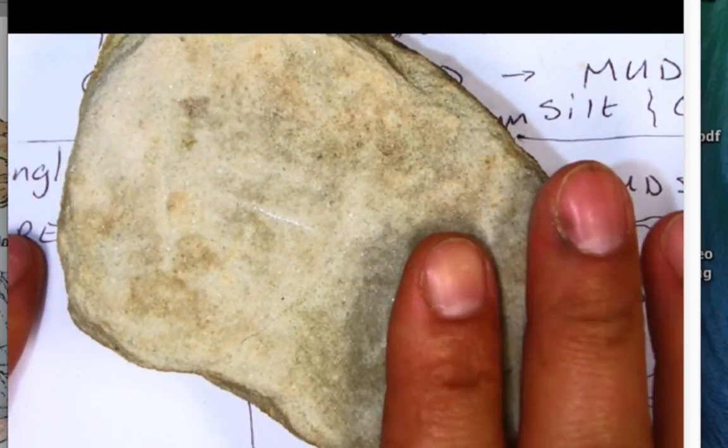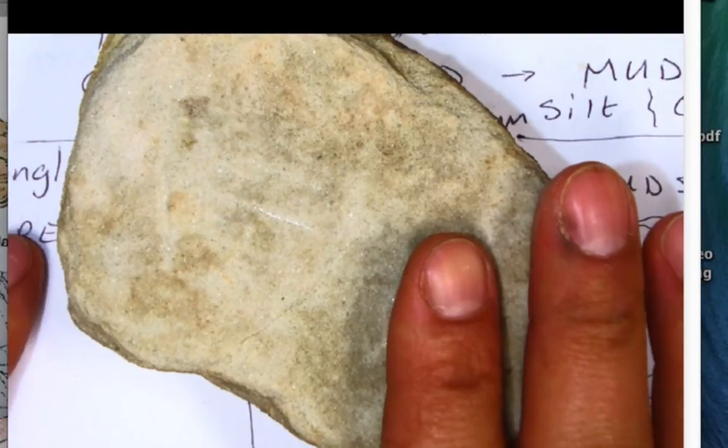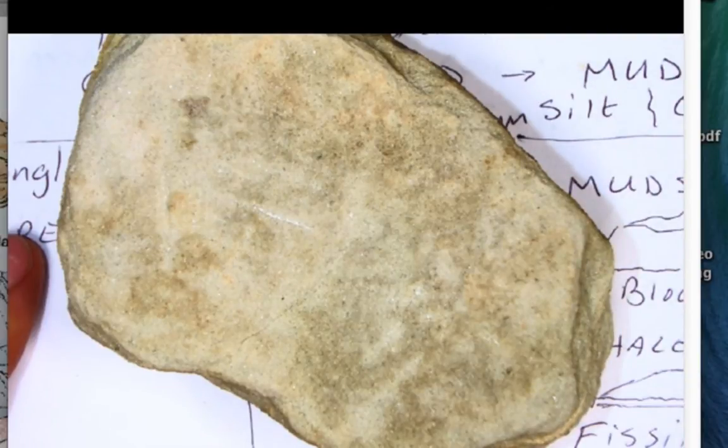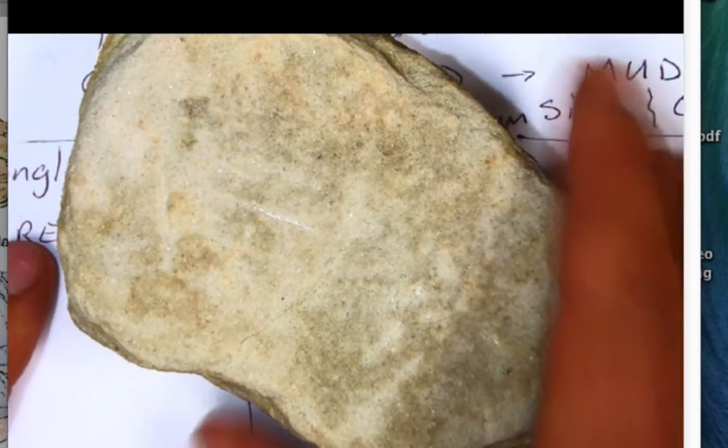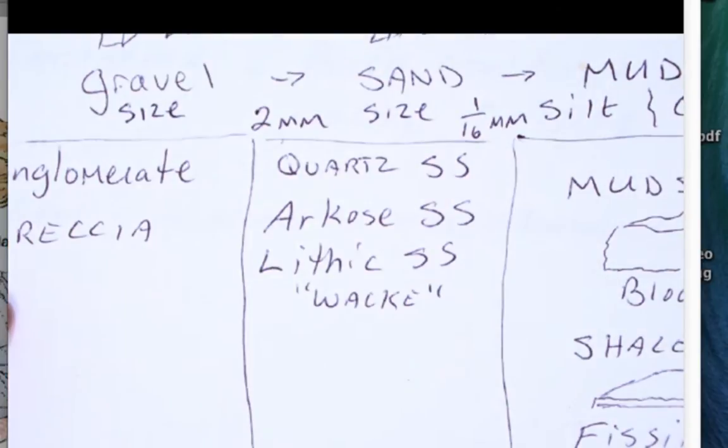This type of sandstone is common to a passive margin like the East Coast. If you've ever been to the beaches in Florida or the Carolinas, they're quartz beaches. They're white beaches. Whereas our beaches, they're kind of beige or brown because they have other minerals mixed in.